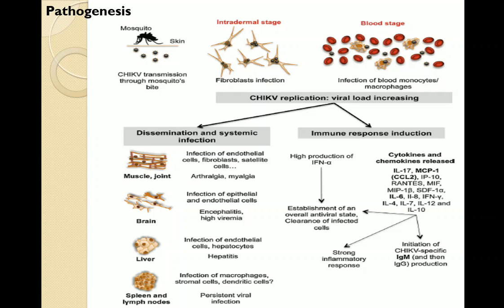In the acute phase of chikungunya, the virus is typically present in areas where symptoms appear, particularly skeletal muscles and joints. In the chronic phase, viral persistence in the body contributes to joint pain. The inflammation response during both the acute and chronic phases results from interaction between the virus and monocytes and macrophages. Chikungunya virus disease is associated with elevated serum levels of specific cytokines and chemokines.